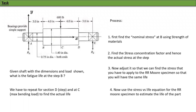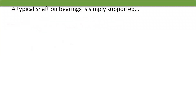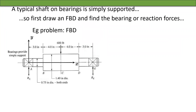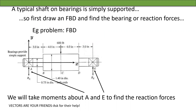A typical shaft on bearings is always simply supported. So we start by drawing a free body diagram and finding the bearing reaction forces. Here's the body, here's the free body diagram, and we will take moments about A and E to find the reaction forces. I will do moments in terms of vectors rather than scalars because it allows us to figure out which component is torsion and which is bending.